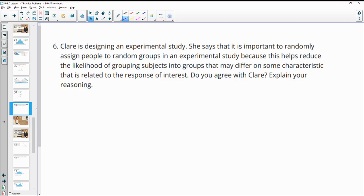Number six. Claire is designing an experimental study. She says that it's important to randomly assign people to random groups in an experimental study because this helps reduce the likelihood of grouping subjects into groups that may differ on some characteristics. Do you agree with her? So yes. You don't have to have random groups in an experimental study, but it obviously helps create the least amount of bias.